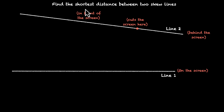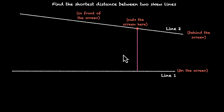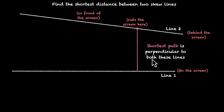Now the next part is to figure out the shortest distance between these two lines. If you have visualized these two lines correctly, you can see that this distance is the shortest path between them. Any two points you join, one on each line, that line segment will be longer than this one. This shortest path is perpendicular to both of these lines.